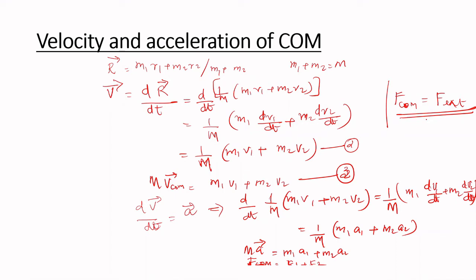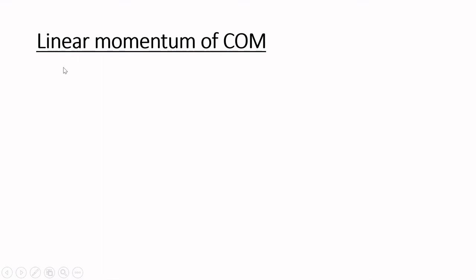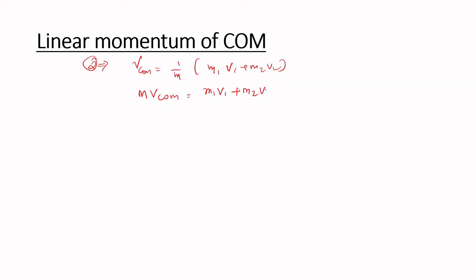The linear momentum of the center of mass can be found from the velocity formula: V_COM = (1/M)(M1·V1 + M2·V2), so M·V_COM = M1·V1 + M2·V2. Since mass times velocity is momentum, P_COM = P1 + P2. This is the linear momentum equation.